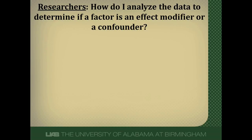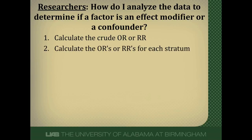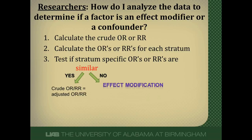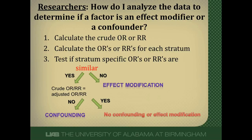For researchers, there are three steps to determine whether a variable is an effect modifier or a confounder. First, calculate a crude measure of effect. Then calculate a measure of effect for each stratum of the potential effect modifier. Finally, test whether the stratum-specific measures of effect are similar. If they are not similar, you have effect modification and should report the stratum-specific measures. If they are similar, compare your crude and adjusted measures of effect — if they differ by more than 10%, you have confounding and should report the adjusted measure. If they differ by less than 10%, you have neither.